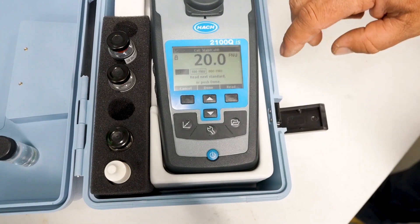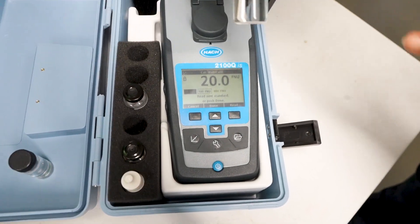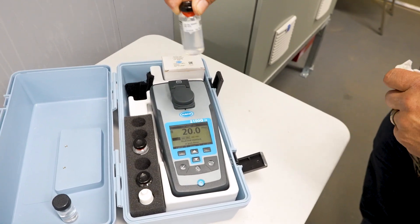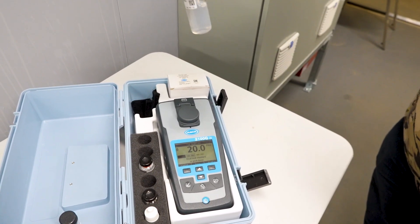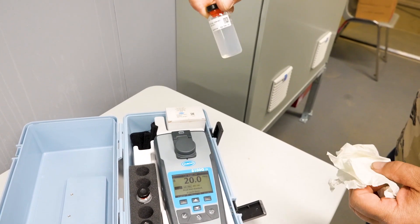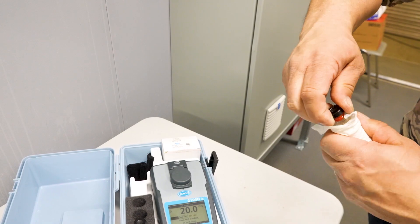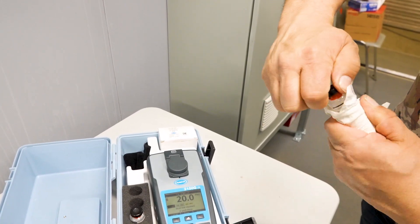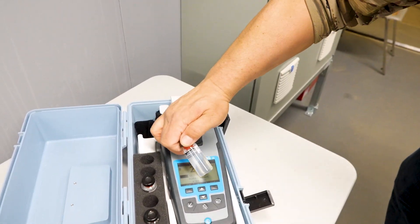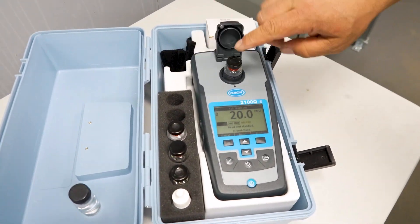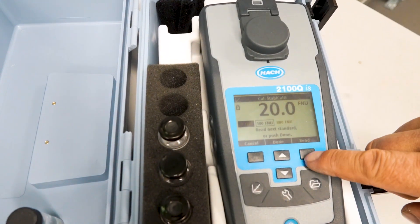Now once that's done, it's asking for the 100 NTU, which will be this one next, is labeled. But you see in the bottom, we've got to swirl that solution in together to get the proper NTU reading. Once it looks like it's evenly mixed in, wipe and polish your vessel, and put your arrow pointing to the arrow, after you've pulled this one out, back in, and then you hit read again.